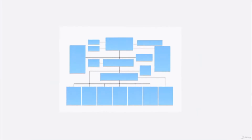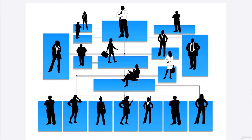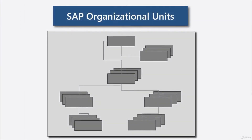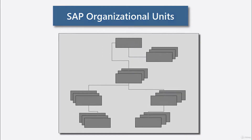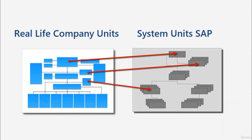Such structures evolve and change over time, and there are no legal requirements for constructing them. By contrast, SAP ERP comes with several predefined organizational units or elements which are related hierarchically or in a net. Thus, real-life company structures must be matched to these SAP structures by assigning the various enterprise units to the system units. And once a company has decided on an organizational structure in the system, it is not easy to change it.